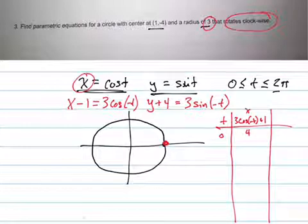Yeah, it's going to be 4 because it shifted over. And if I plug in y, which is 3 sine of negative t minus 4, sine of 0 is 0, so that's negative 4.